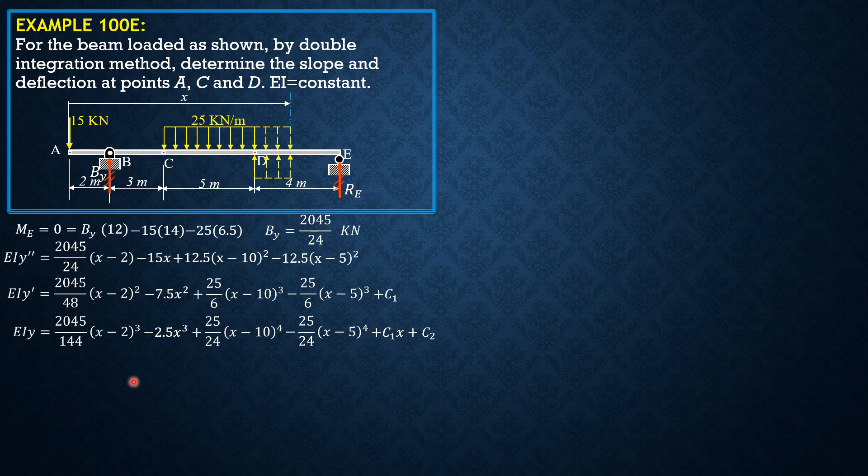Now enforce the boundary conditions. When X is 2, Y is zero. This gives zero equals negative 20 plus 2C sub 1 plus C sub 2. So 2C sub 1 plus C sub 2 equals 20. Call that equation 1.